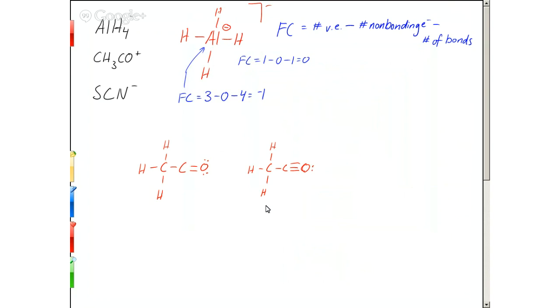Where should the formal charge go on the structure on the left? On the carbon, right. The carbon will have a positive formal charge. And what about on the right?